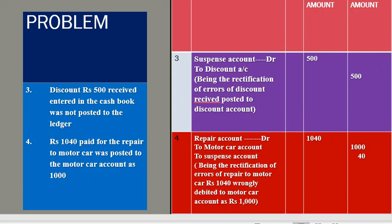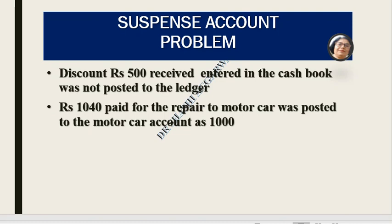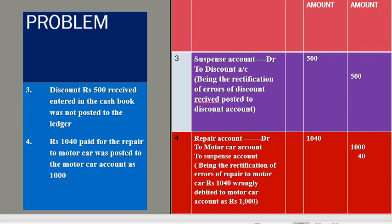For Error 4: Rs. 1,040 paid for repair to the motor car was posted to the motor car account as Rs. 1,000. We had to debit the repair account but by mistake debited the motor car account. To rectify: debit the repair account by Rs. 1,040, credit the motor car account by Rs. 1,000 to cancel it, and the difference of Rs. 40 is credited to the suspense account. This is the rectification of repair wrongly debited to the motor car account as Rs. 1,000.